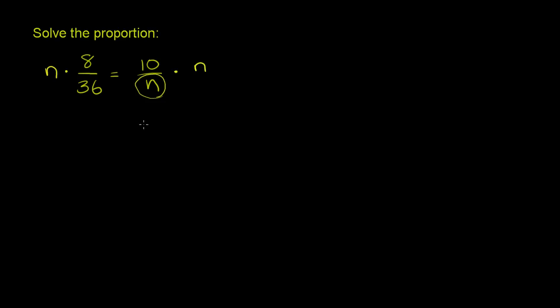If you multiply both sides first by n, the whole purpose of doing that is so that this n in the denominator will cancel out with this n, which is essentially in the numerator. You could view this as n over 1.